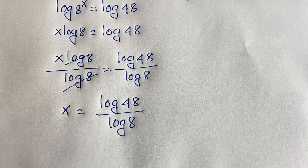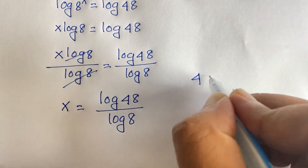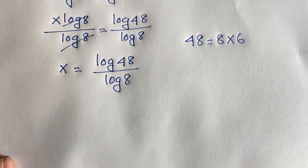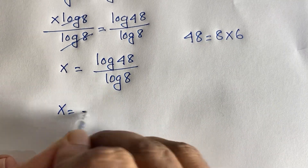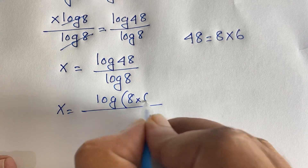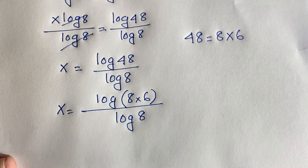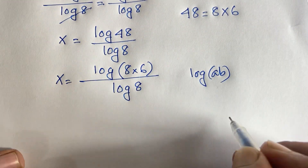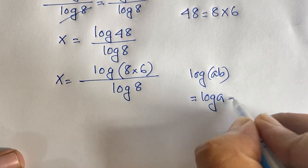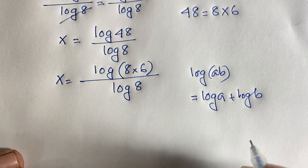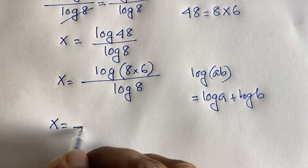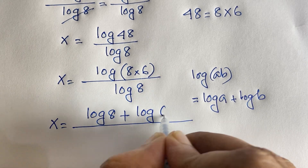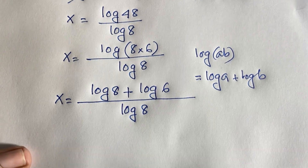Now I evaluate log 48. Since 48 equals 8 times 6, we have x equals log(8 × 6) over log 8. Using the product rule — log(a·b) = log a + log b — this becomes x equals (log 8 + log 6) over log 8.